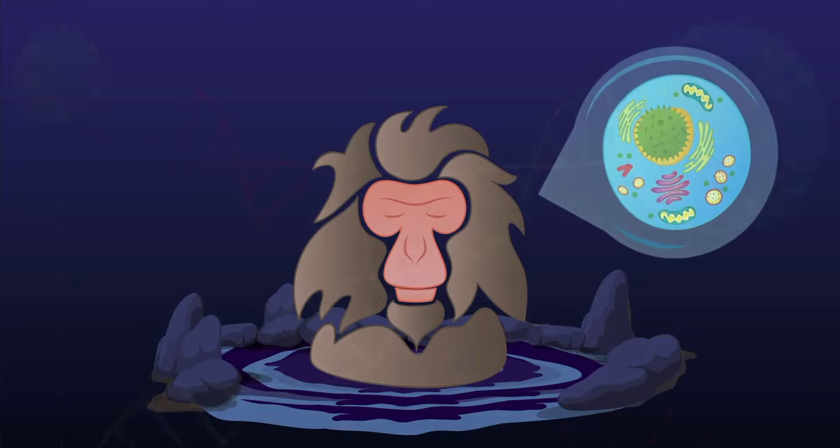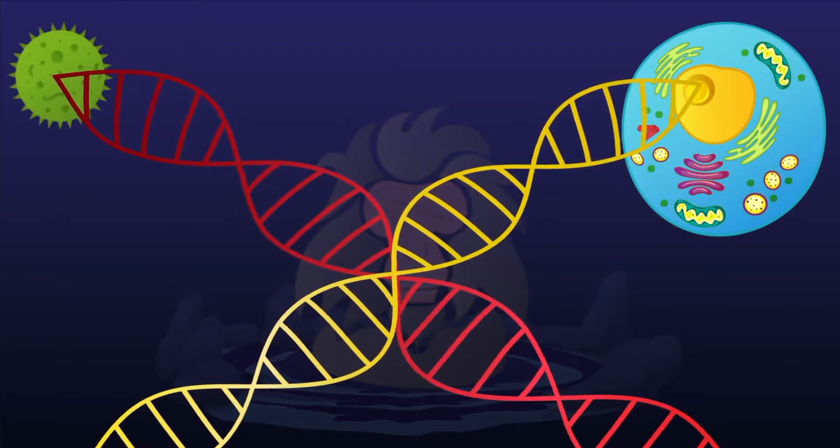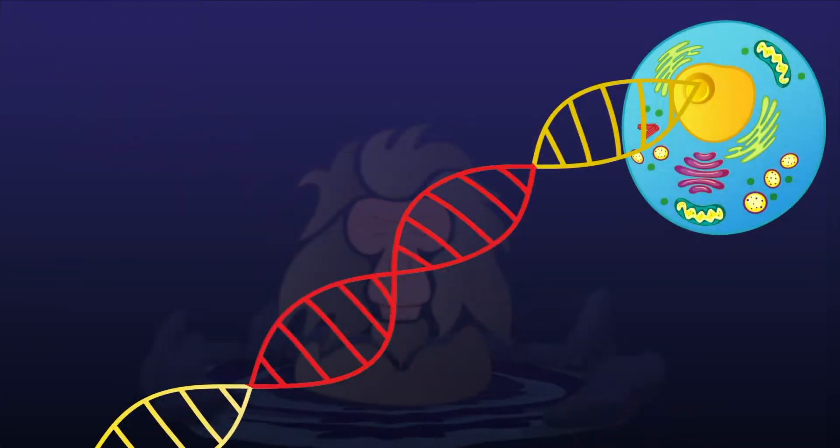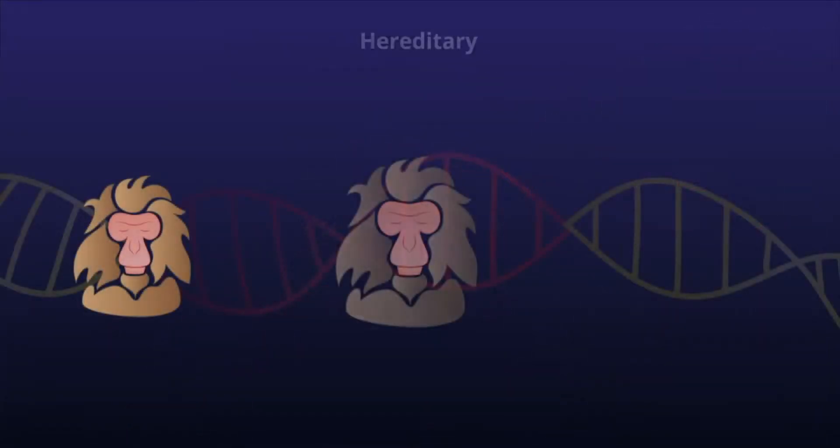When a virus invades an organism, it alters its genetic code in order to replicate itself. This can leave a mark, a fingerprint on the host's DNA that is then passed on for generations.